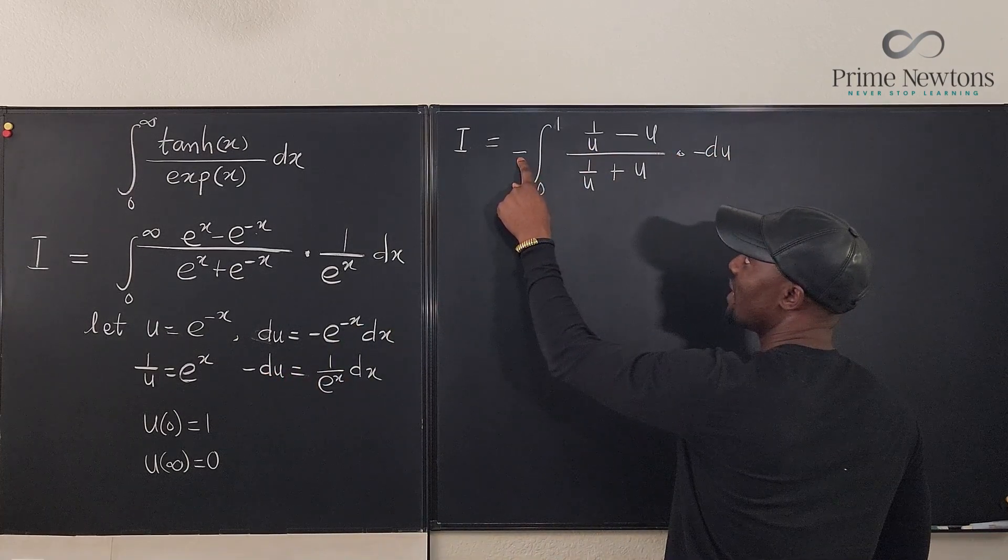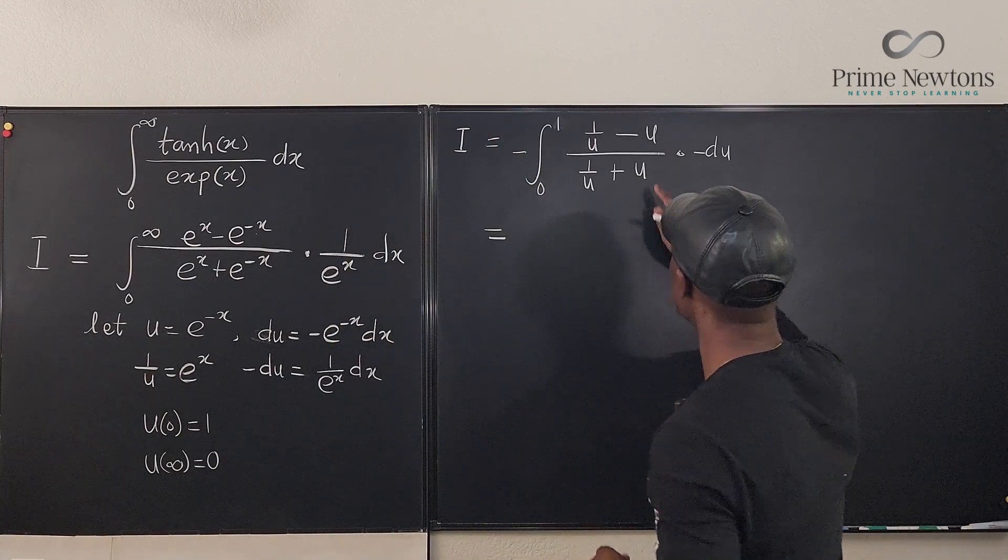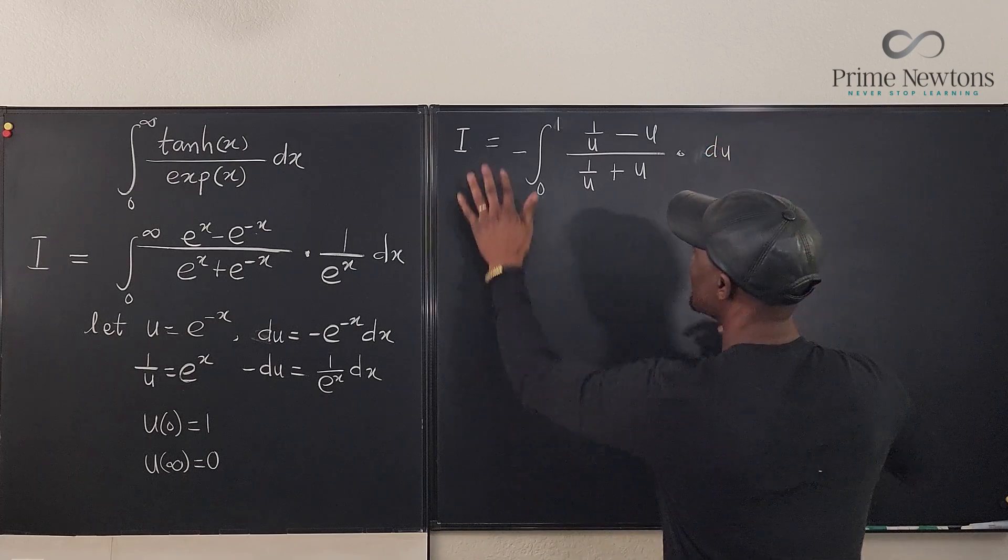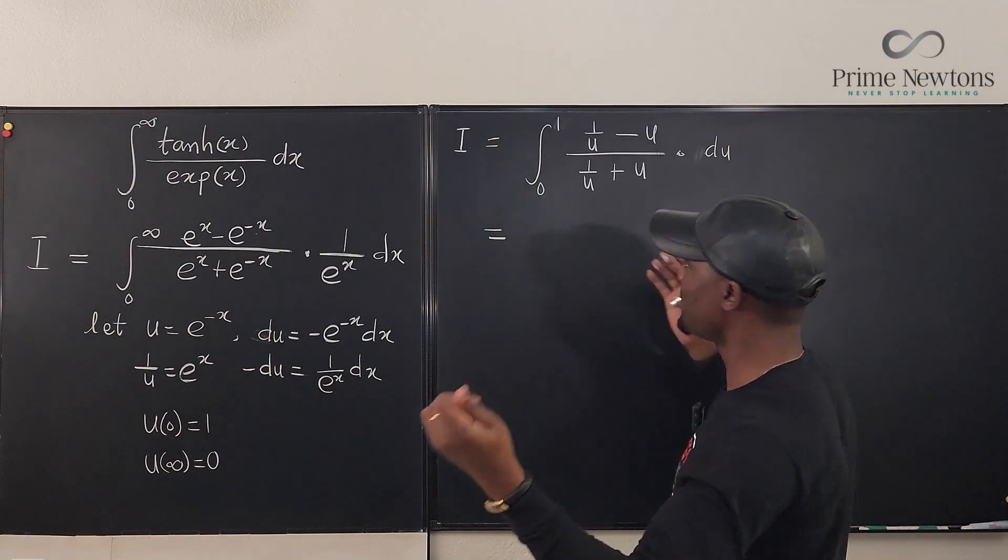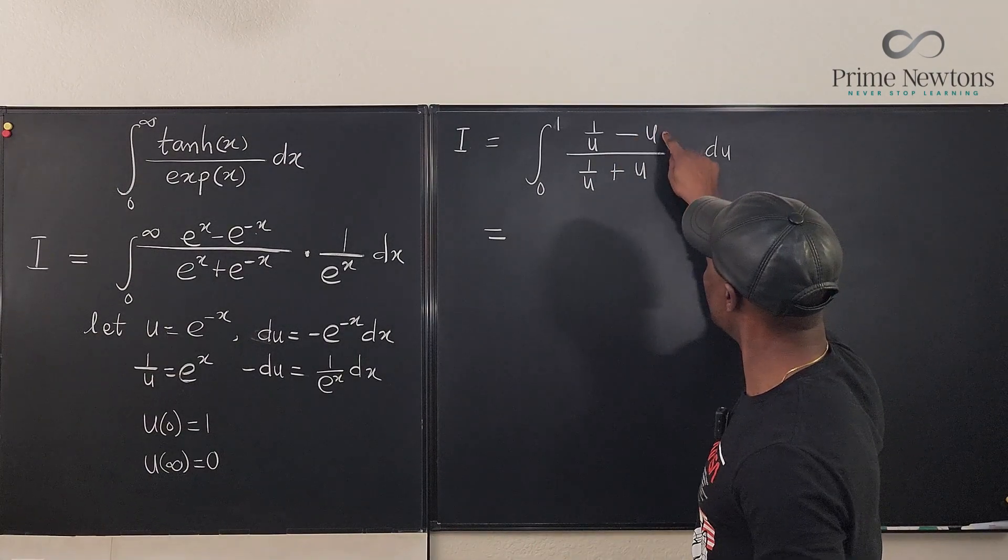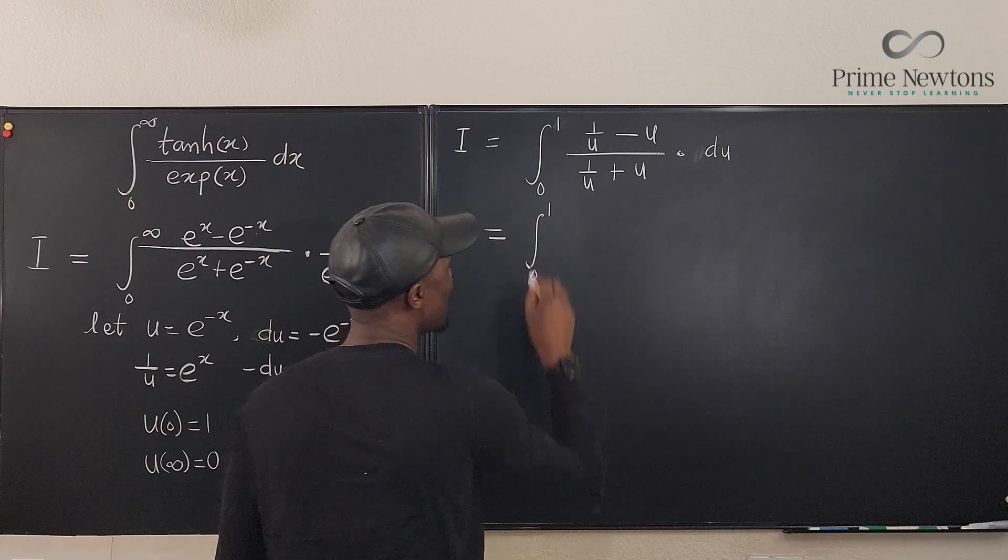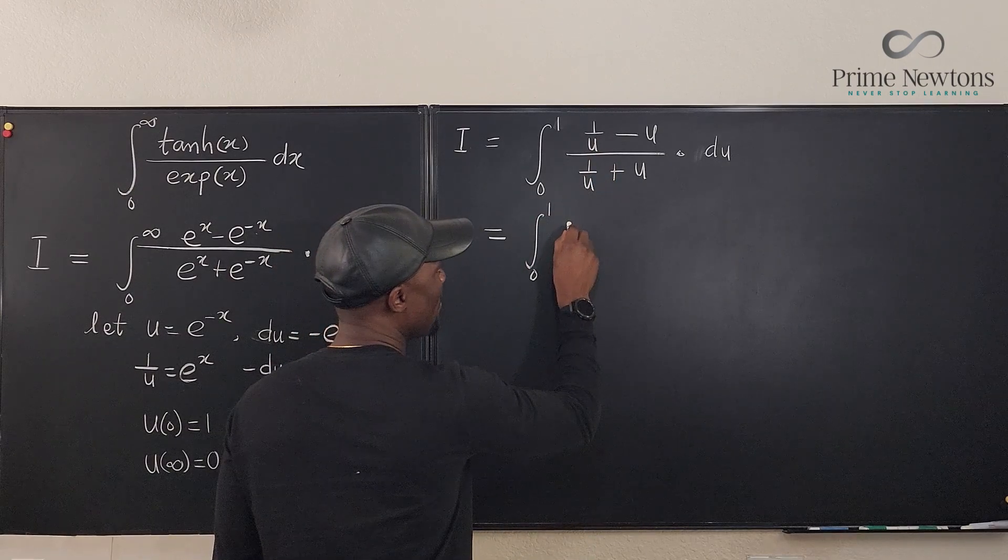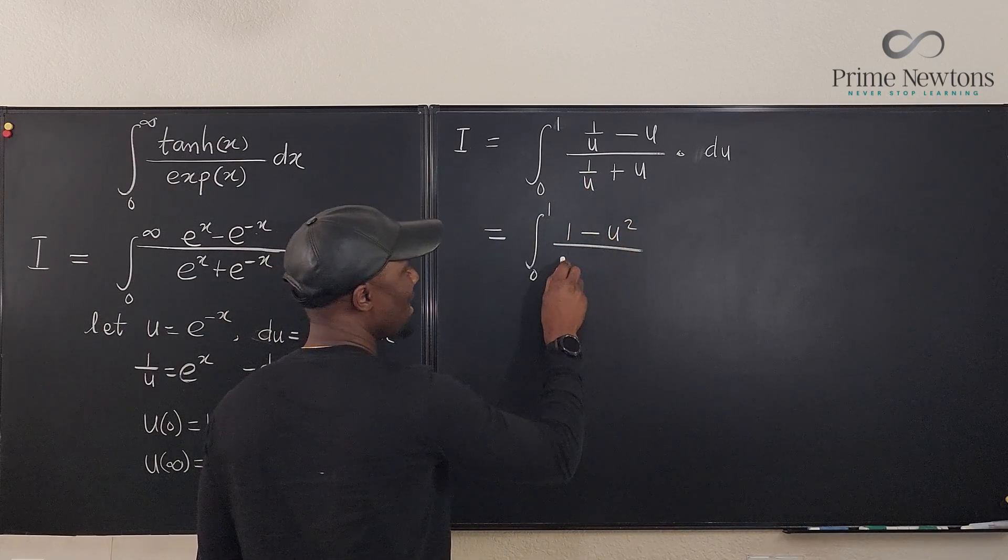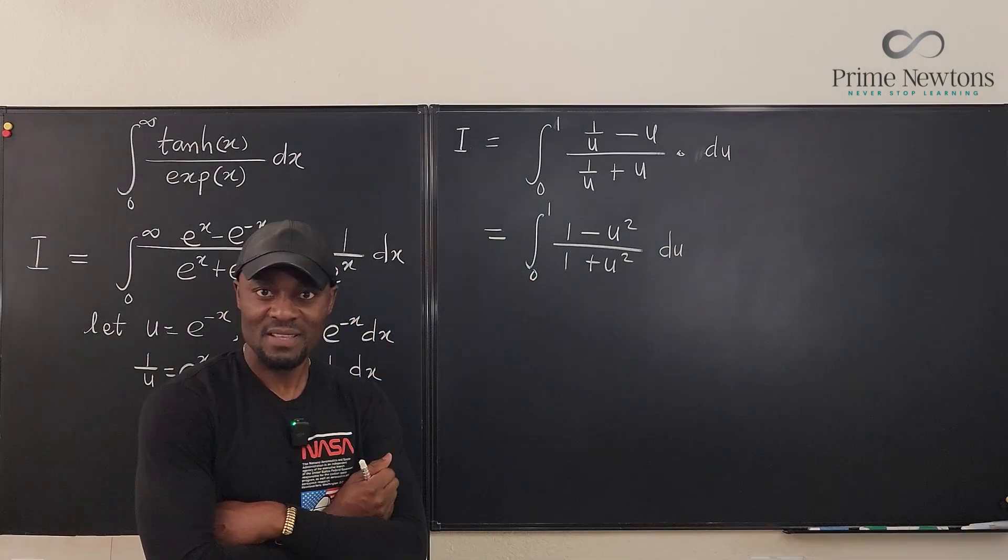Well, this minus can help us undo this. So that it becomes a plus. So we can say that our integral is actually, while I do this, this minus comes here and cancels this out. Minus times minus becomes a plus. Now, what do we do here? I have a fraction within a fraction. So I'm just going to multiply the top and bottom by u. And what happens is the integral from zero to one is going to become if I multiply this by u, I get one minus u squared over multiply this by u, I get one plus u squared. And I have the du.